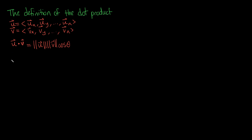When I say the cosine of the angle between them, what I mean is that if this here is v and this is u, the angle between them is theta. This is the definition of the dot product, but there is an alternate definition — an alternate way to calculate the dot product that many students often learn before they even learn the formal definition of the dot product.